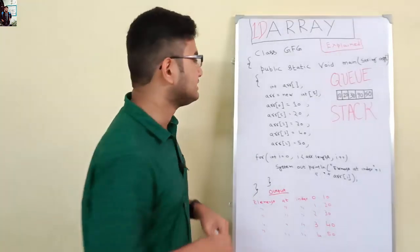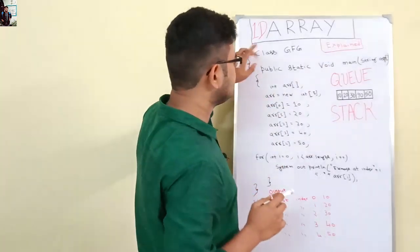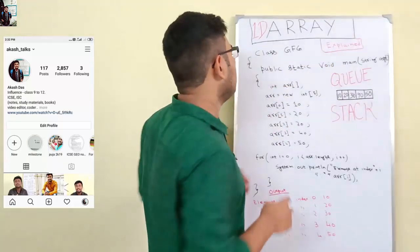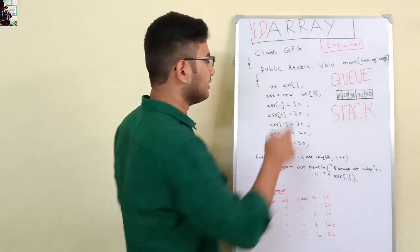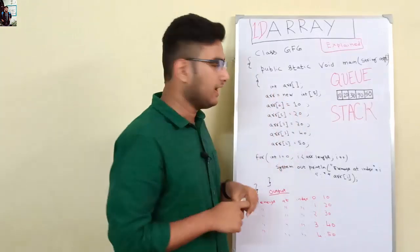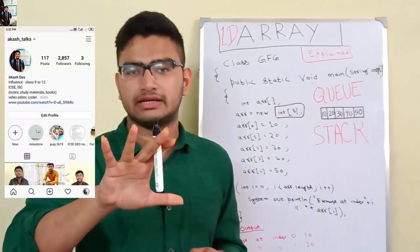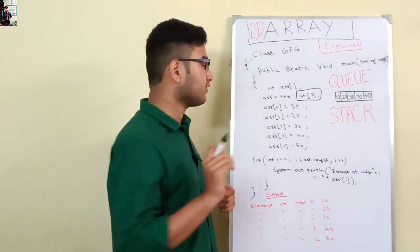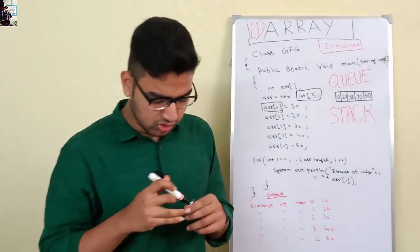Let's see a simple program on array. So class grg, public static, the bracket is open, then public static void main, then again the bracket is open. Then int array, third bracket open and close semicolon, then arr of new int 5. This means that the array will contain five characters or five variables.